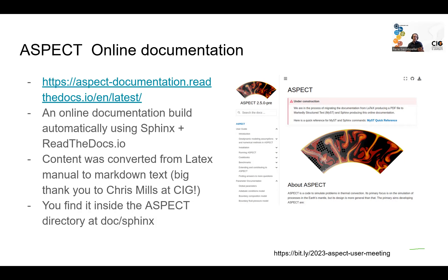You can also find these documentation files offline inside the Aspect repository. Just like the old PDF manual was always hosted in the folder doc/manual, the new documentation is currently at doc/Sphinx. If you don't have internet access, you can either check the source files in that folder or build the documentation locally if you have Sphinx installed. In that case, you wouldn't need any internet access to see the documentation.